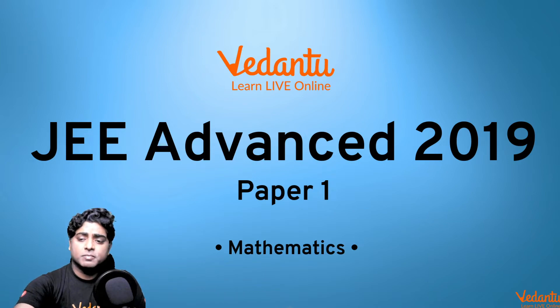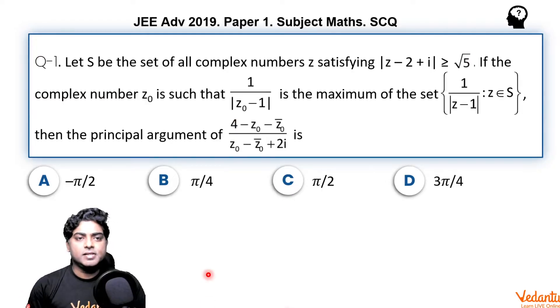It's from the chapter complex numbers. It says let capital S be the set of all complex numbers z satisfying mod of z minus 2 plus iota is greater than root 5. If the complex number z0 is such that